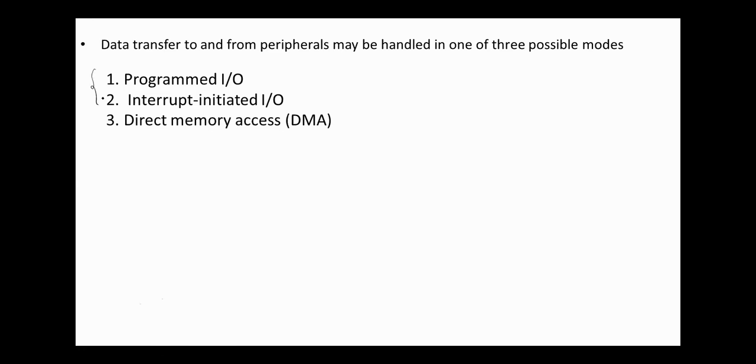In the previous videos, we discussed the first two methods. In programmed I/O, the processor keeps scanning whether a device is ready for data transfer, and if one is ready, the processor dedicates itself to transferring data between I/O and memory. The transfer rate is high, but there is a waste of time on checking the flags, and the CPU cannot get involved in any activity during the transfer.